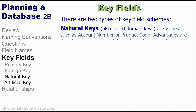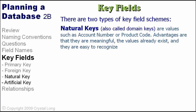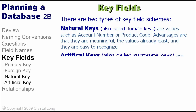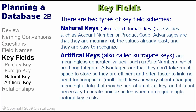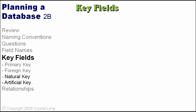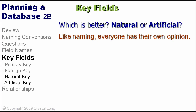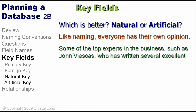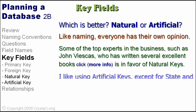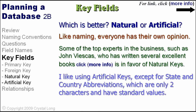There are two types of key field schemes. Natural keys are values such as account number or product code — advantages are that they are meaningful, the values already exist, and they are easy to recognize. Artificial keys are meaningless generated values — advantages are they don't take much space, are efficient, and are often faster to link, with no need for composite multi-field keys or worry about changing meaningful data. Key fields can be transparent to the user. Some top experts like John Vieskas favor natural keys; I like artificial keys, except for state and country abbreviations, which are only two characters and have standard values.